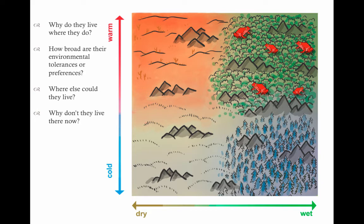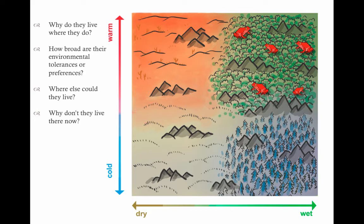When you use a model like this, what sorts of assumptions are we making? It actually boils down to the exact sort of assumptions we're making when we think of these things as estimates of the niche. We're basically basing our ability to trust our answers, our biological answers, on how much we think the model has estimated the underlying biology. That's pretty straightforward. And that's bound to be species-specific or model-specific.